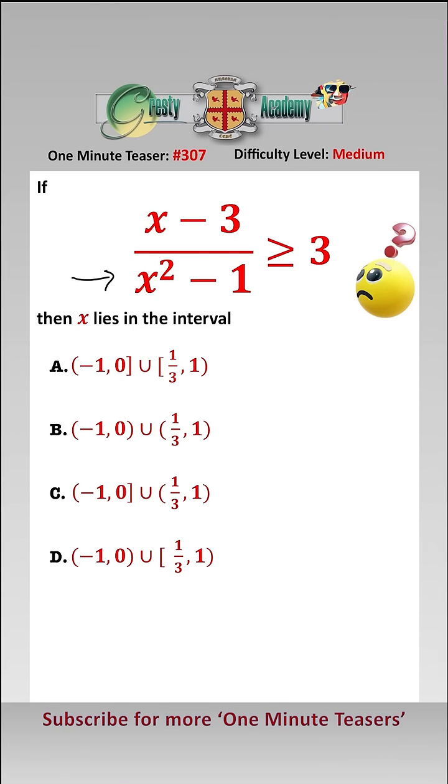We can't multiply both sides by x squared minus 1 because we don't know if it's positive or negative, so we take 3 from both sides. That is, x minus 3 over x squared minus 1 minus 3 is greater than or equal to 0.